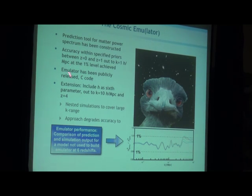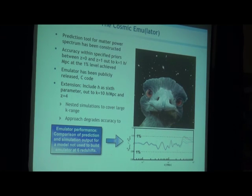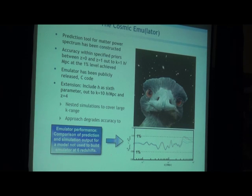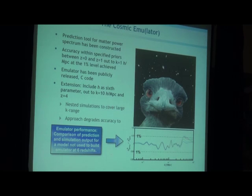We simulated another model not used to build the emulator and looked at how well our emulator does. This is the ratio of the emulator over the simulation, and this is the 1% error line. The different lines are different redshifts, and we are actually doing really pretty well. Then people complained that we didn't include h as a free parameter and wanted us to go out to higher k beyond k=1. So we thought about what we could do without completely redoing the project.